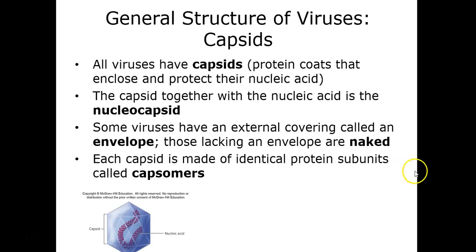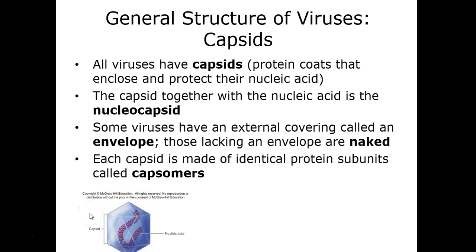All viruses have that capsid or protein coat that surrounds and protects the nucleic acid. The individual subunits that make up the capsid are known as capsomers — a protein molecule. In the core, we have the helically wound nucleic acid, the DNA or RNA. This particular viral particle represents what would be known as a naked or non-enveloped virus, since it does not have the additional envelope layer found in animal viruses.